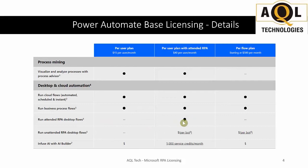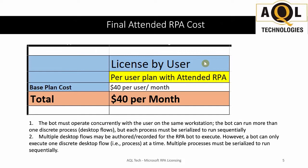Attended RPA is part of only the second plan — the $40 plan. For unattended RPA it applies to both the $40 plan and the $500 plan, but at additional cost. For attended RPA, one bot runs concurrently with the user on the same workstation and can execute one or several desktop flows — but they must be serialized, not run in parallel. The cost is $40 per user per bot per month.